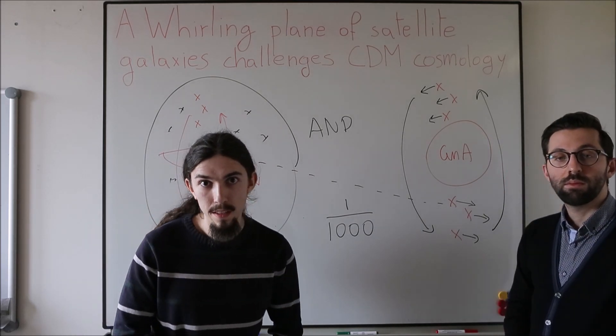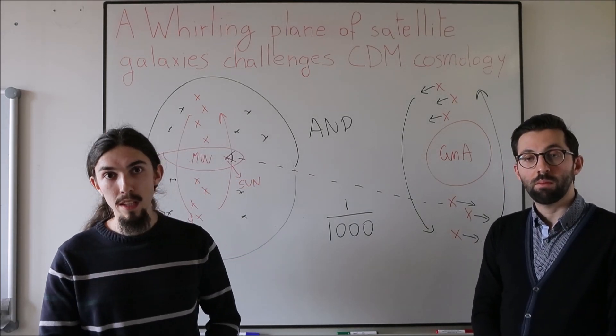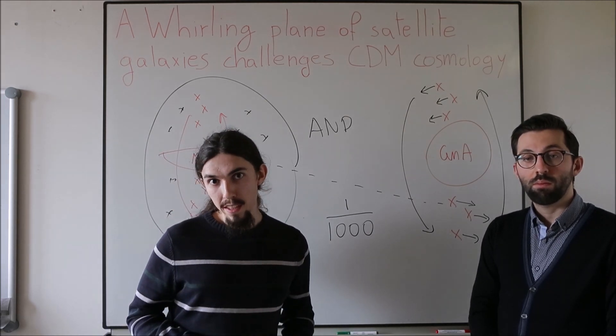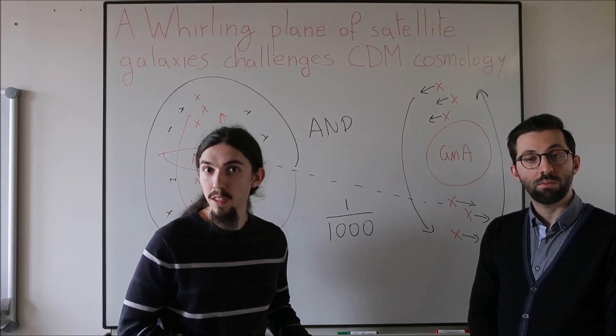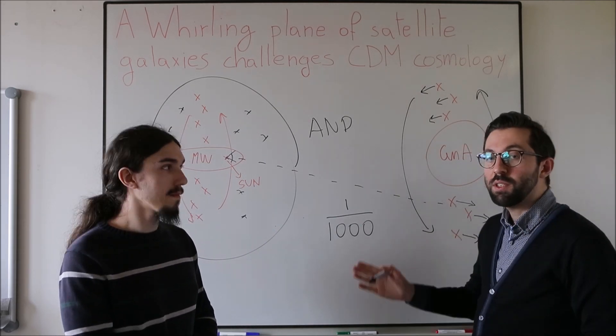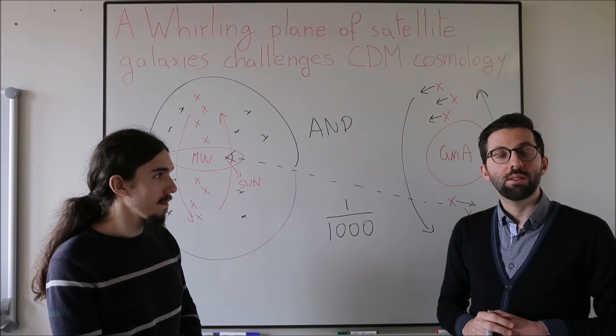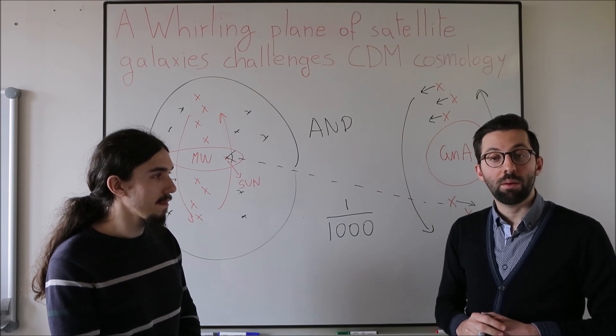This work shows that the Milky Way system and Andromeda system are not so odd at all. A similar co-rotating plane of satellite is also found around Centaurus A. We do not know how these satellite planes form, but we do know that they should be rare in the standard cosmological model based on dark matter.